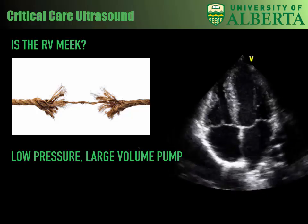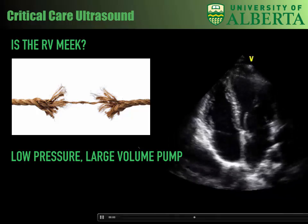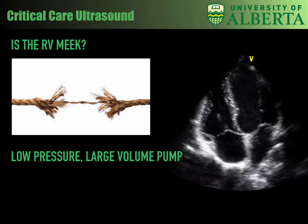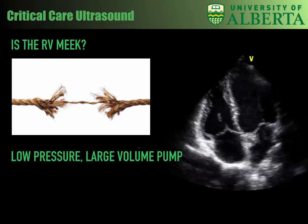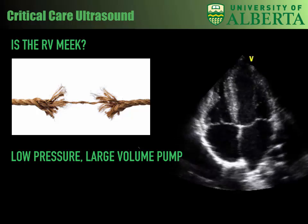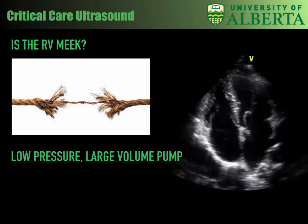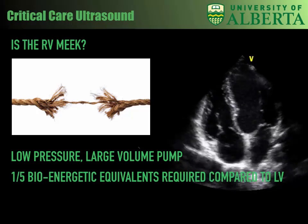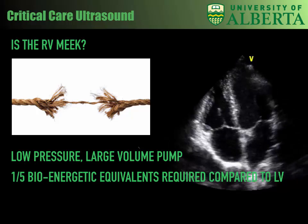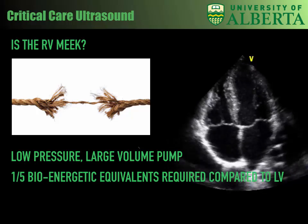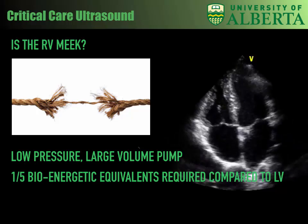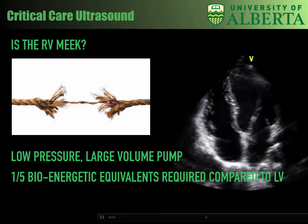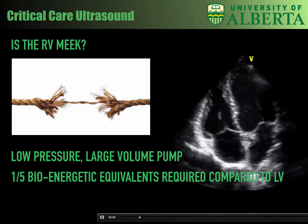The RV is really meant as a low-pressure, large-volume pump. It's not equipped to deal with the same degree of afterload increases as the left ventricle is, and so the right ventricle pumps into the high-volume, high-compliance pulmonary circulation. It's a very thin wall compared to the LV, along with one-fifth of the bioenergetic equivalents compared to the LV. So it's really not adapted to dealing with high pressures — it's not meek, it's just different, and it's more fragile to changes in afterload.